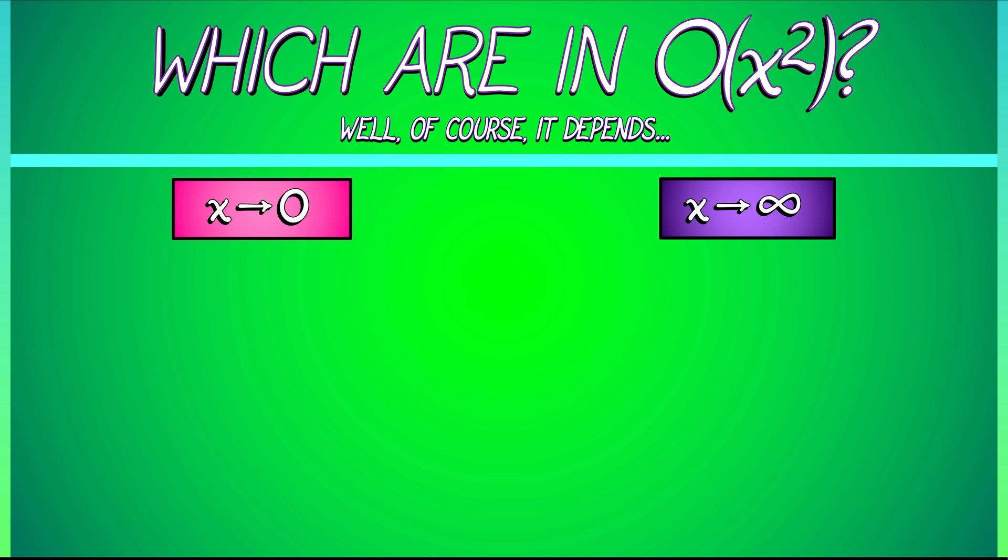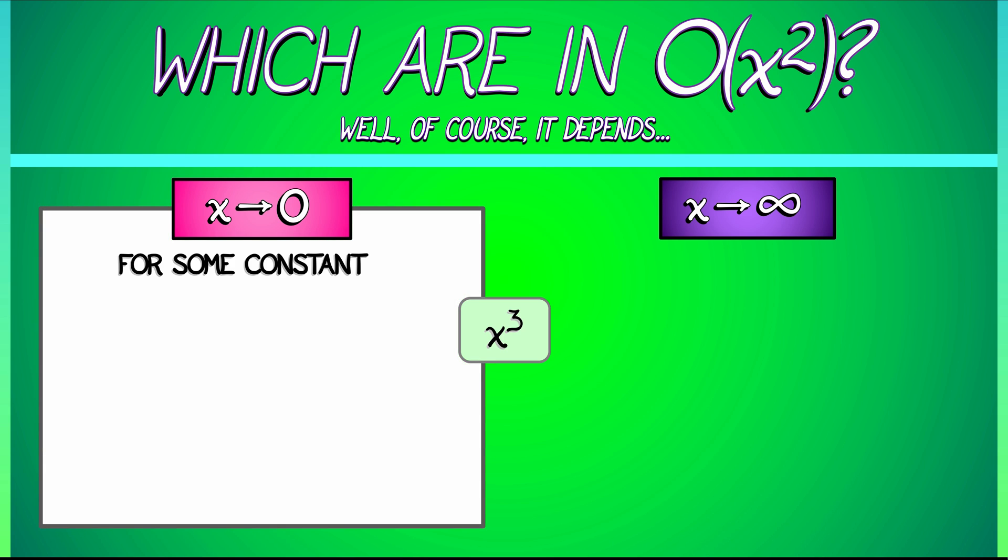So, for example, if we consider the function x cubed and say, is that in big O of x squared? Well, in the limit as x goes to zero, what we need to answer is whether or not there's some constant c so that x cubed is less than or equal to c times x squared. And let's assume that x is a small positive number here so that we don't have to write a whole bunch of absolute value signs.